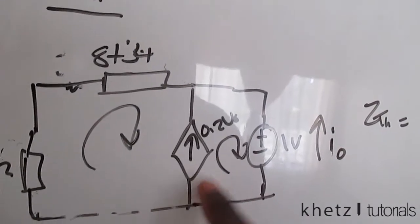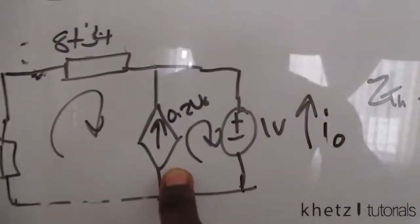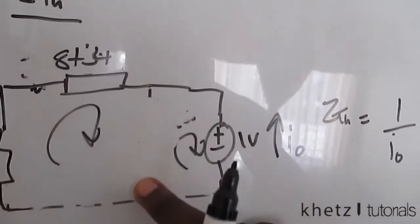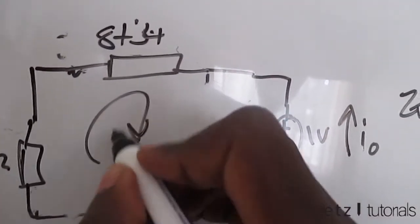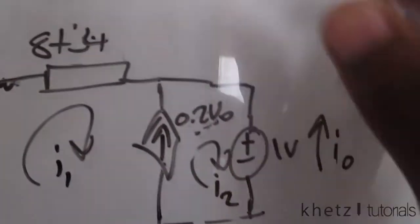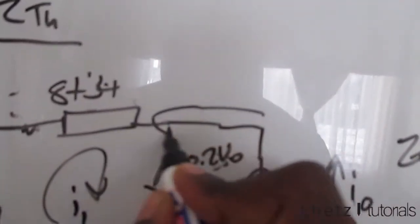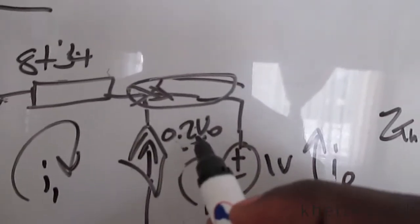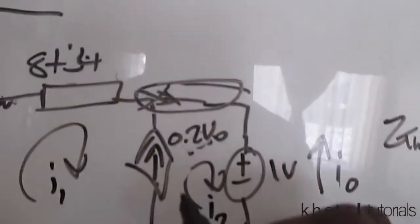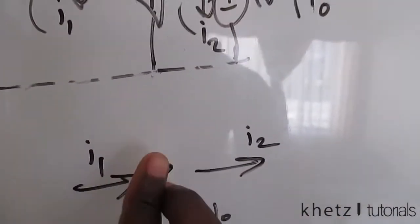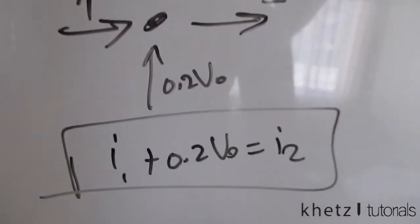We now have two meshes. Looking at the circuit, there is a current source between the two meshes, which qualifies as a super mesh. Name the mesh currents i1 and i2. At the top node: i1 goes in, 0.2 VO goes in, and i2 goes out. Therefore: i1 + 0.2 VO = i2. This is the equation from the current source forming the super mesh.